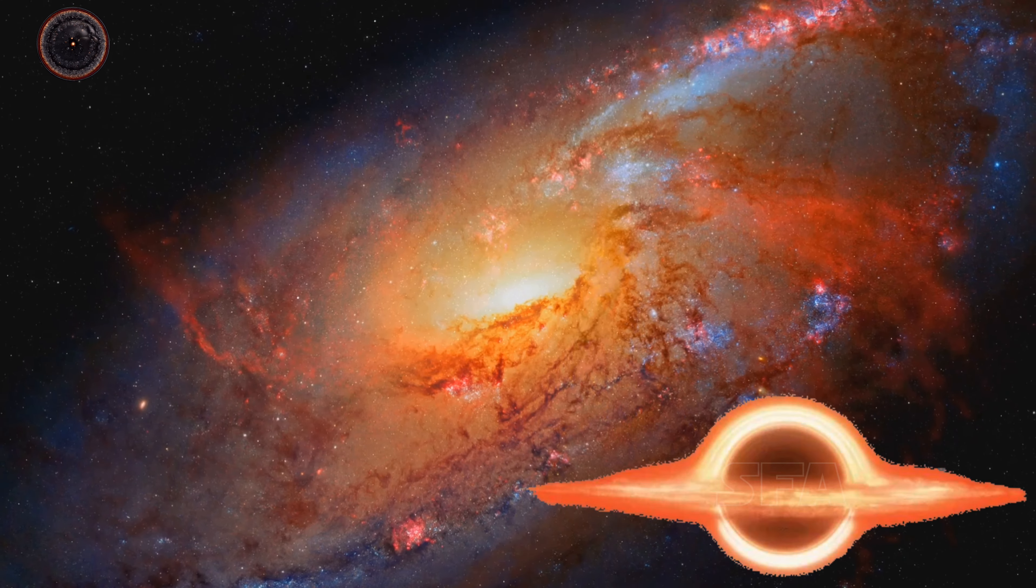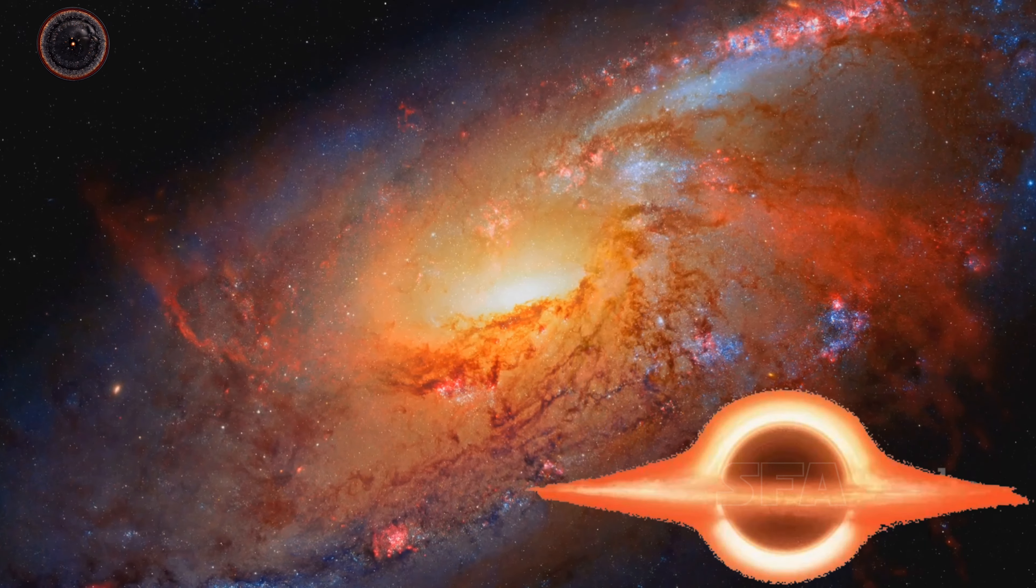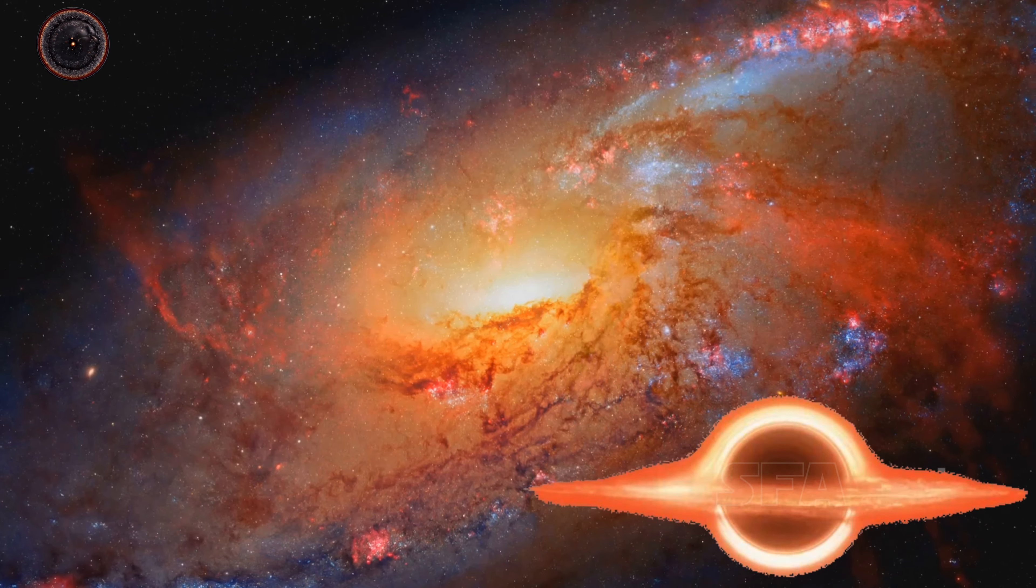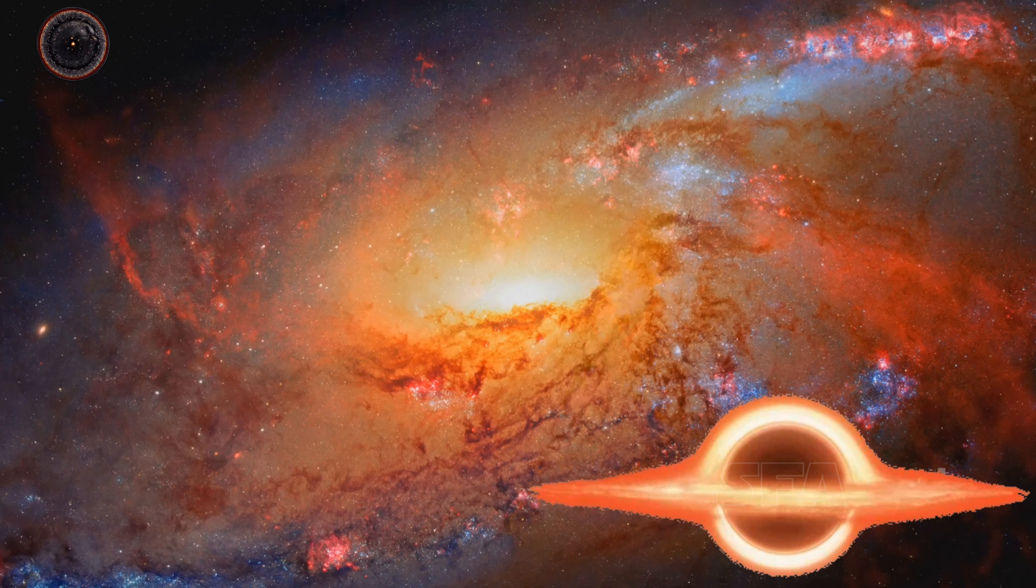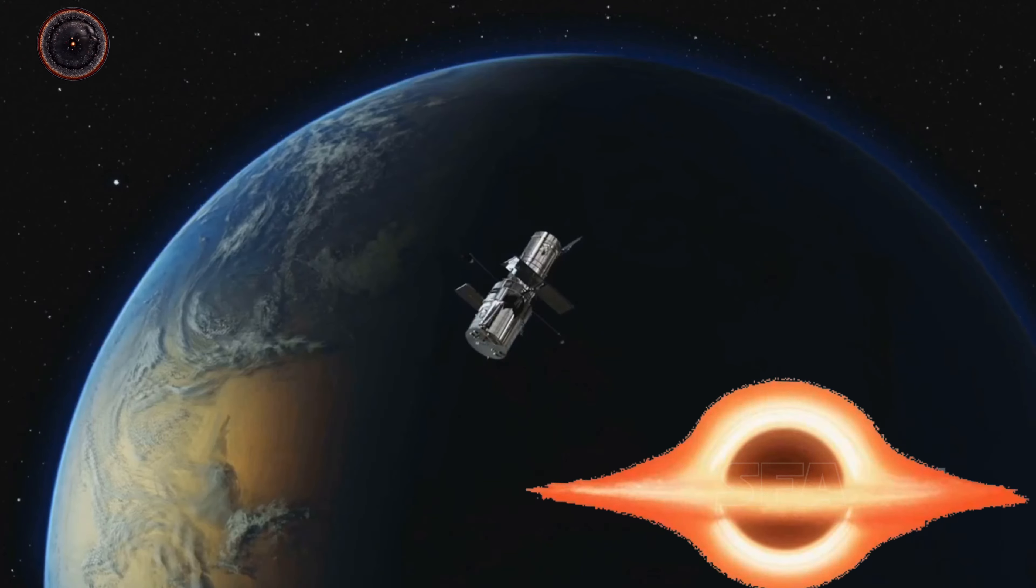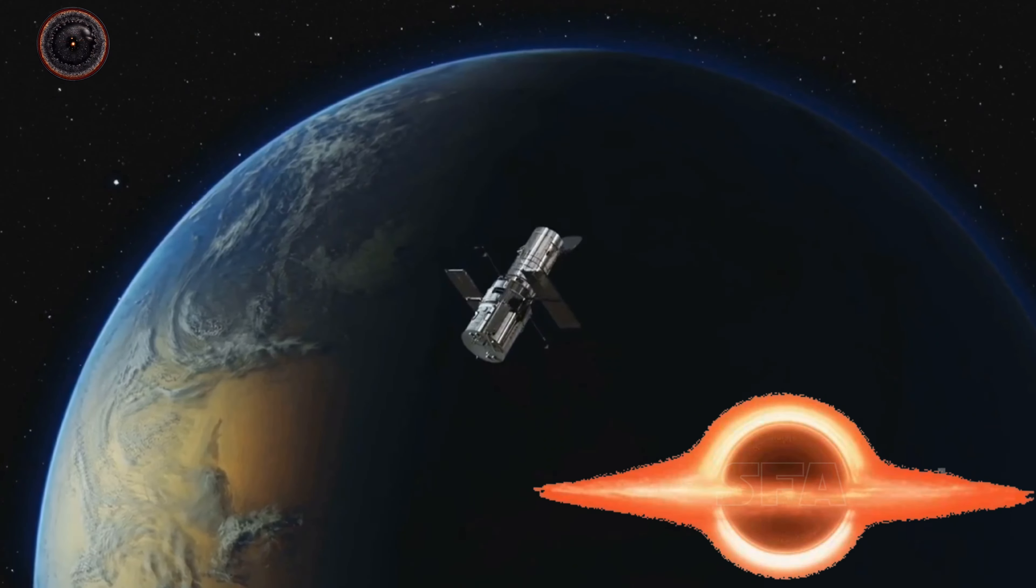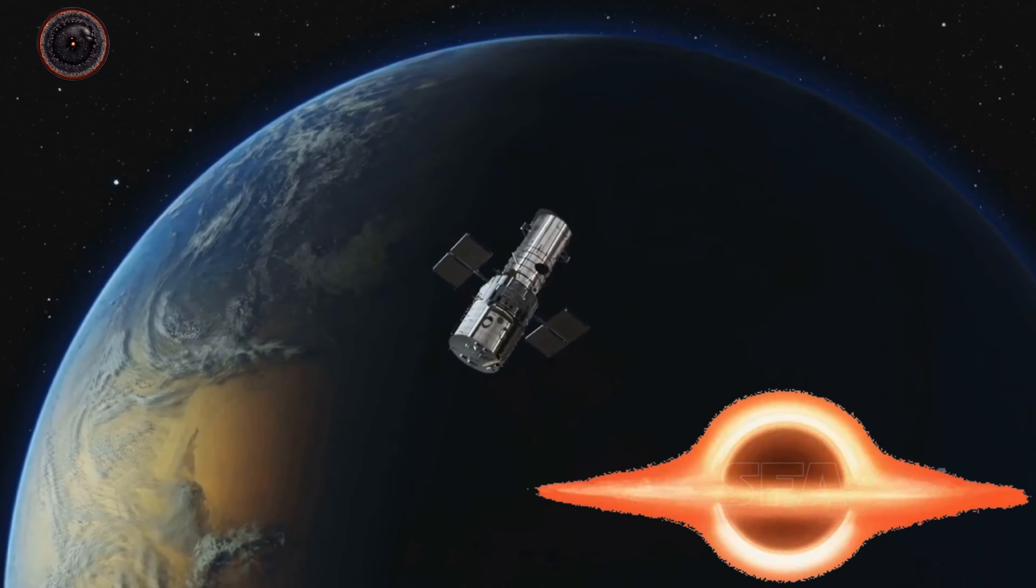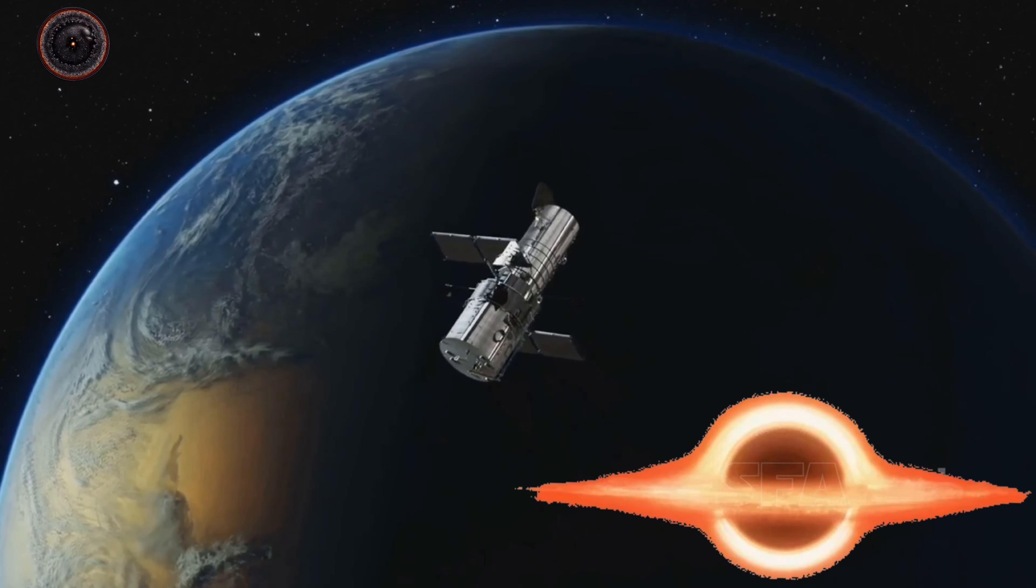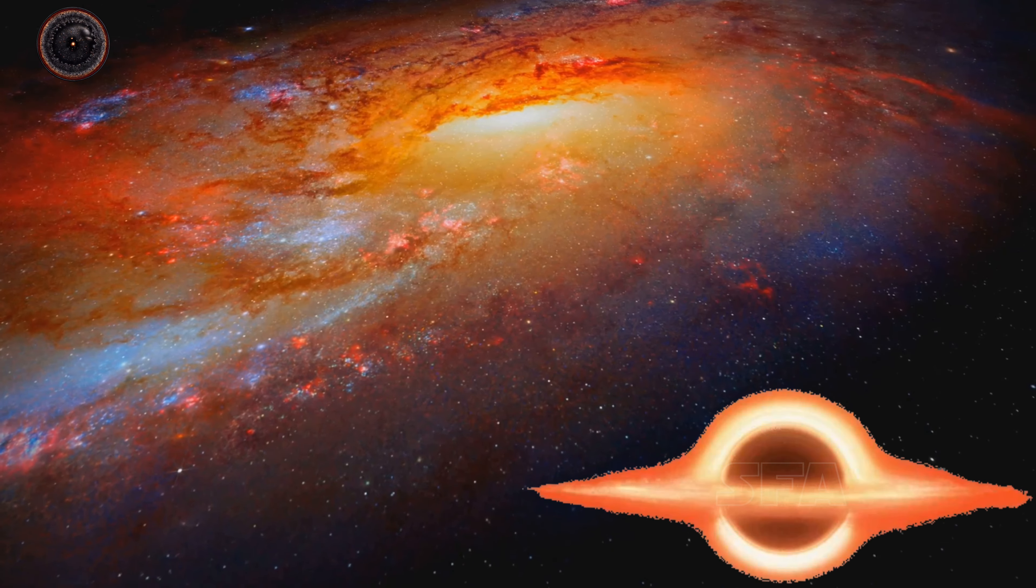Now you might be wondering, how do we know the universe is expanding? The answer lies in something called the Hubble Constant, named after the astronomer Edwin Hubble. This constant is a measure of the rate of expansion of the universe. It's approximately 73 kilometers per second per megaparsec. In simpler terms, for every megaparsec of distance from us, a galaxy appears to be moving 73 kilometers per second faster.